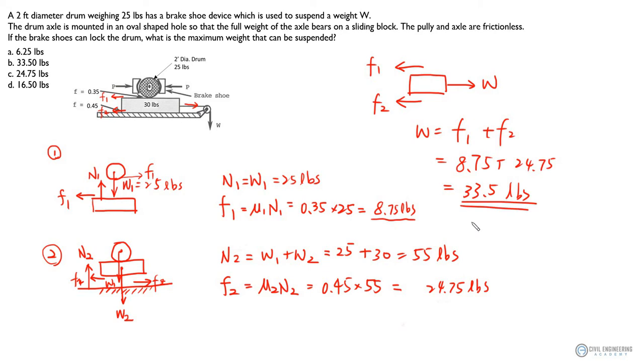That will be our final answer, which is B, 33.5 pounds. Although the statement of the question is relatively long, if you break it down into several free body diagrams with respect to the interfaces, you will be able to find the force equilibrium equations that you can use to solve for the maximum weight or this pulling load. That's it for today, thank you for watching.